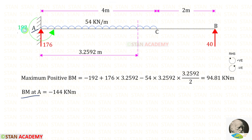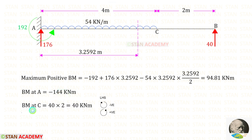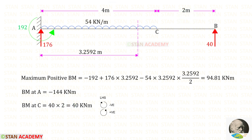Now let us find the bending moment at point A. At A, we have MA acting anti-clockwise, so it is negative. To find the bending moment at C, we use the left-hand side rule. RB acts anti-clockwise (positive) and the distance is 2. The bending moment at C equals 40 kNm.